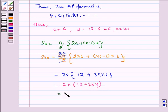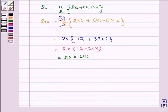Which is equal to 20 multiplied by 246, which equals 4920.